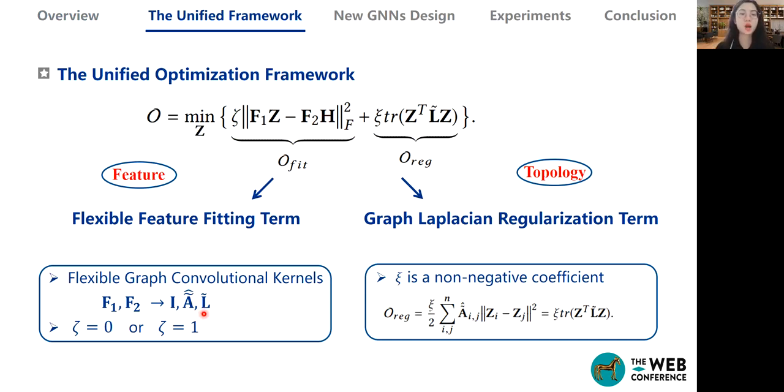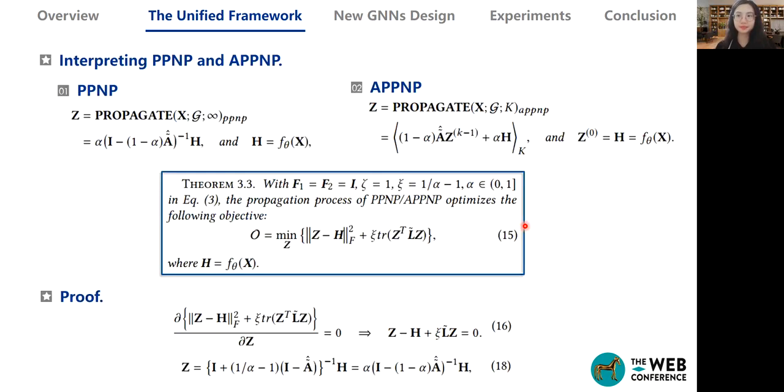Note that F1 and F2 here can be chosen from the I, all-pass, A, low-pass, or L, high-pass convolutional kernels, and so on. The second term is a graph Laplacian regularization term, which constrains the learned representation of two connected nodes to be similar, so that the homophily property of the graph can be captured.